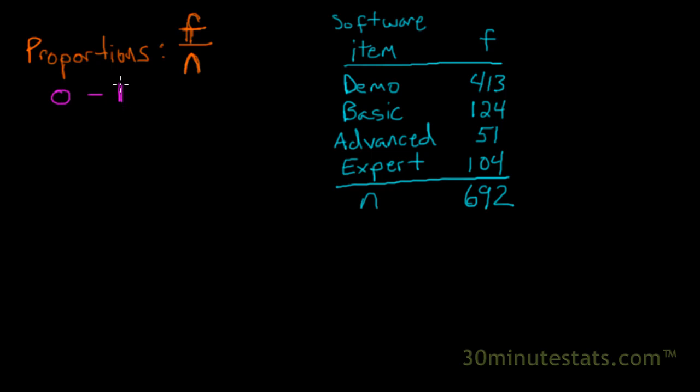That gives us a number somewhere between 0 and 1. If the event never happens, then the proportion will be 0. Zero divided by anything is 0. And if this event happens every time, in other words, if we've got n observations, and for every one of those observations this event happens, then we'll get a proportion that's equal to 1. So proportions range from 0 to 1, and they're created with this simple formula.